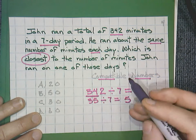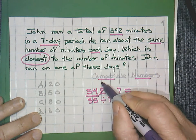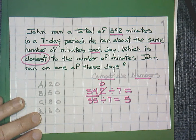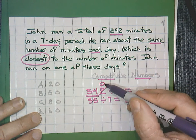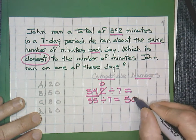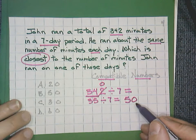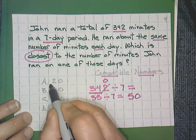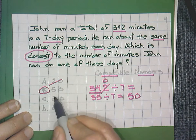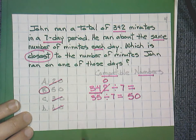We still have that 2. We're going to cancel out that 2 and zero it. Count two zeros and write two zeros. So 50 is our quotient. That would be answer B, 50.